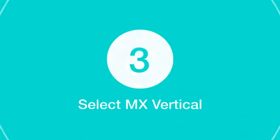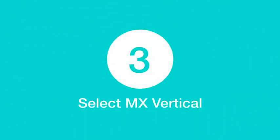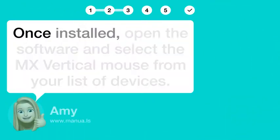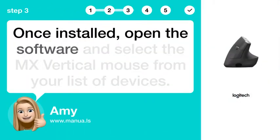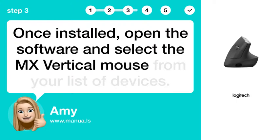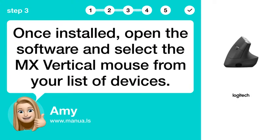Step 3: Select MX Vertical. Once installed, open the software and select the MX Vertical mouse from your list of devices.